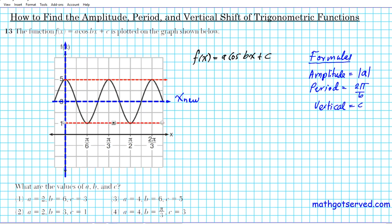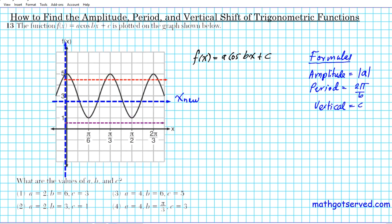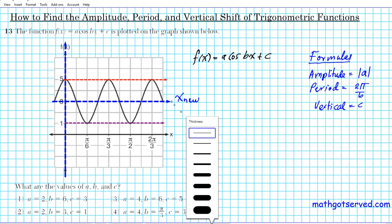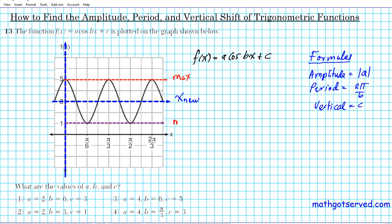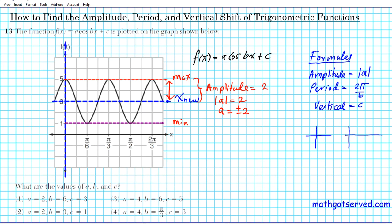The distance from the center to the max represents your amplitude. So to find the amplitude, look at the distance between the maximum and the minimum. Counting it: one, two — so your amplitude is 2. Therefore, the absolute value of a is 2, meaning a is plus or minus 2.